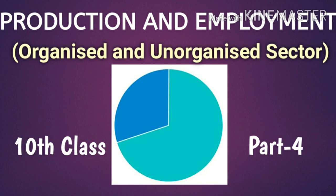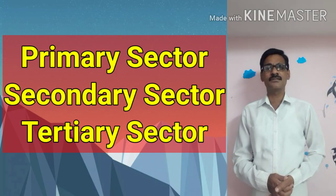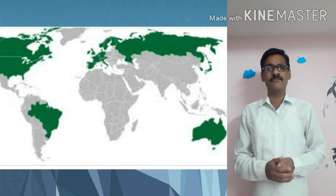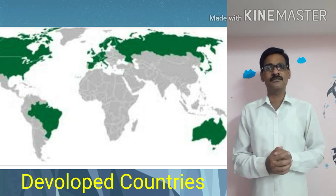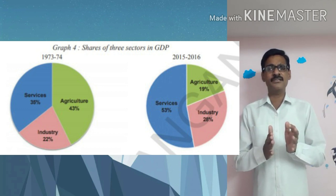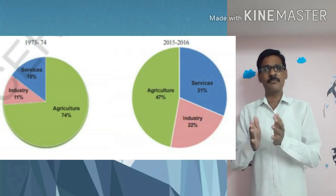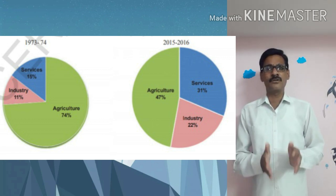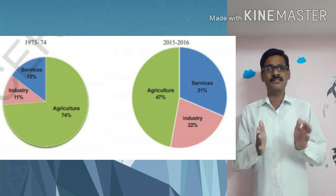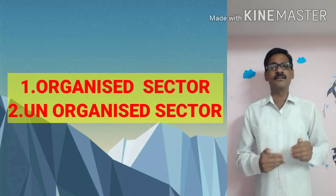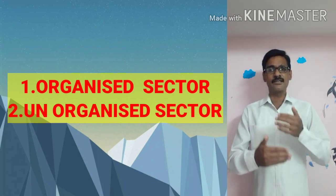Good morning children. In the earlier class we discussed all the sectors and how they contributed to the GDP, and which type of pattern is followed in developed countries and whether that pattern is followed in India or not. We came to the conclusion that the pattern in the share of sectors to the GDP is followed in India, but the shift in employment has not taken place. To understand the problems behind that, we have to classify the workers as organized sector and unorganized sector.